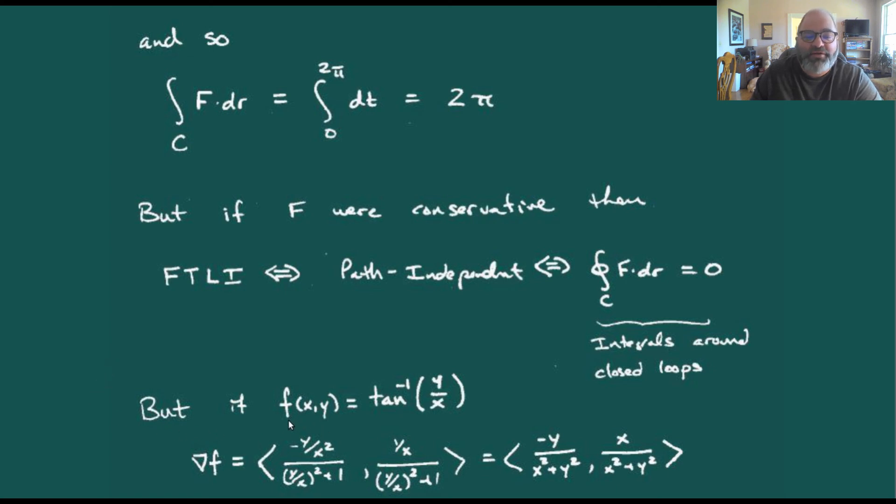If we take this scalar function f of x, y being arc tangent of y over x, and compute the gradient of that thing, we're getting minus y over x squared plus y squared, plus x over x squared plus y squared. Wait a minute. That is our vector field that we started with.